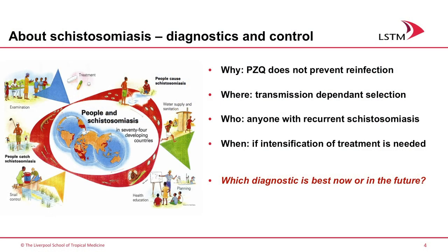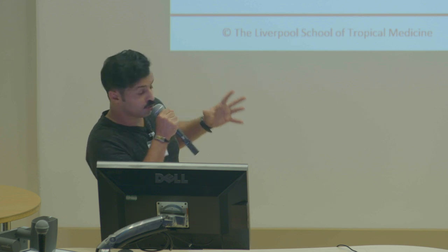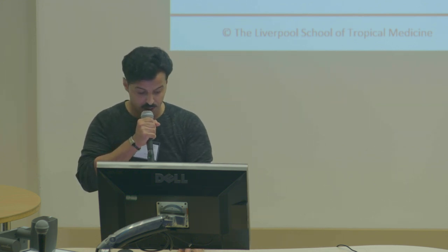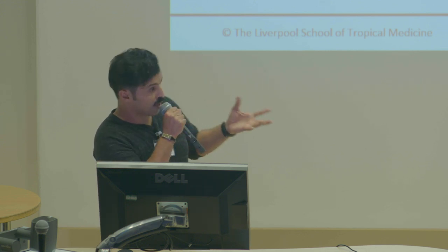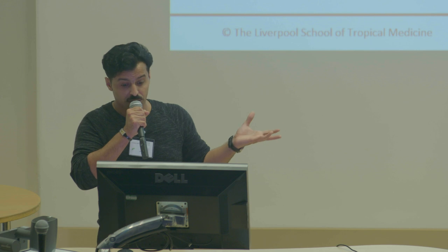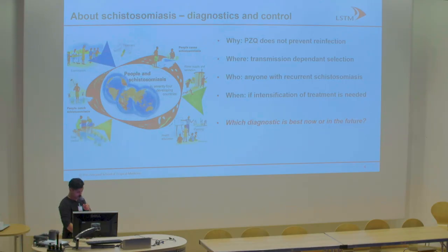Colonoscopy is rare in Africa and in some parts not available at all. So what we know about schistosomiasis: we do examination, we do treatment, we do snail controls. Why? Because we need to know if we can prevent pre-infection, and we need to know where transmission occurs, who to include — also adults, not only school-aged children — and where we need to scale up treatment. Which diagnostic to use now and in the future will address all these issues together.